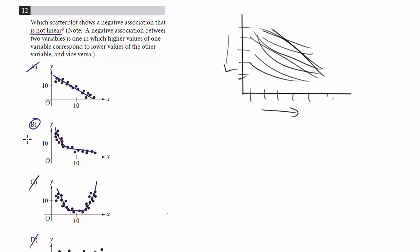So a couple things on this one. Number one, be very careful to read the question carefully, that it's not linear and that it's a negative association. And then draw in your own best fit lines to help you see how the data is moving. And in this case, it leads us to choice B.